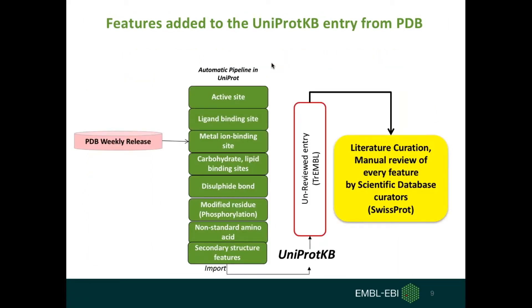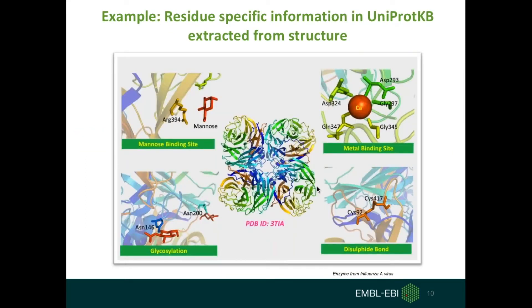The next part is how we add important features of a structure to a protein sequence. PDB database releases newly added structures every week. At UniProt, we have developed an automated pipeline to import important features from these structures, such as active sites, ligand binding, metal binding, or carbohydrate binding sites. We import all these important features into UniProt automatically and put them under the unreviewed entry category. Later, expert scientific database curators search the literature manually and confirm this data, ensuring high quality and immensely reliable information.